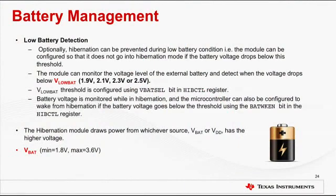The hibernation module can be independently powered by a battery or external auxiliary power source. The module can monitor the battery voltage level and detect when it drops below the VLOBAT threshold. The voltage threshold can be between 1.9 to 2.5 volts, configured using the VBAT select pin in the hibernation control select register. The microcontroller can also be configured to wake from hibernation if the battery voltage goes below the threshold, or configured so the device does not enter hibernation when the battery falls below a certain threshold. It is important to ensure that VDD is higher than VBAT, otherwise the hibernation module will draw power from the external battery and drain it.